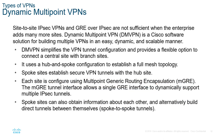We also have Dynamic Multipoint VPNs, or DMVPNs. This is a Cisco software solution for building multiple VPNs in a more dynamic and scalable manner. It uses hub-and-spoke technology and what is known as Multipoint GRE, or MGRE. The MGRE tunnel allows a single GRE interface to dynamically support multiple IPSec tunnels. Spoke sites can also obtain information about each other and build direct spoke-to-spoke tunnels, effectively creating a mesh-type network.